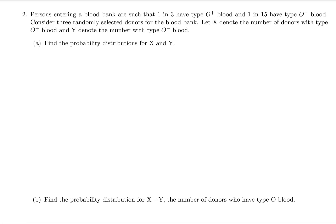Persons entering a blood bank are such that 1 in 3 have type O plus blood, so probability of O plus equals one third. And 1 in 15 have type O minus, so probability of O minus equals 1 over 15. Consider 3 randomly selected donors. Let X denote the number of donors with type O plus blood and Y the number with type O minus blood. Find the probability distribution for X and Y.